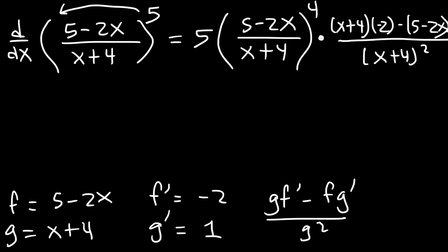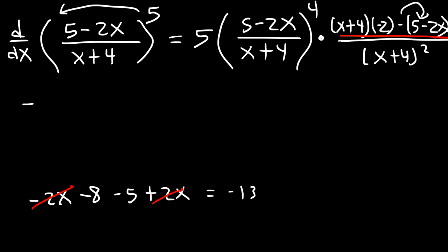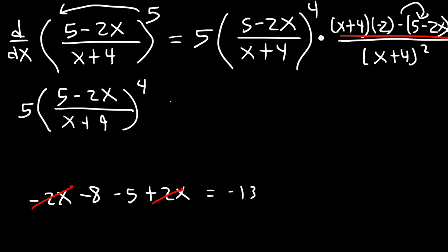Simplifying the numerator: x plus 4 times negative 2 is negative 2x minus 8. Distributing the negative sign to 5 minus 2x gives negative 5 plus 2x. The 2x terms cancel, leaving negative 8 minus 5, which is negative 13. So we have 5 times 5 minus 2x over x plus 4 raised to the 4th power, times negative 13 over x plus 4 squared.